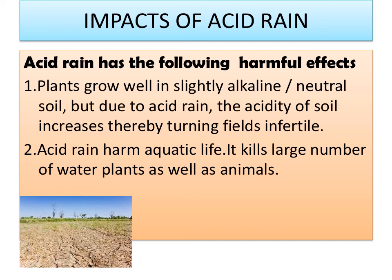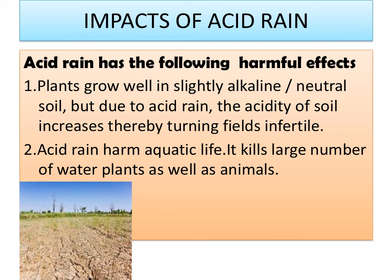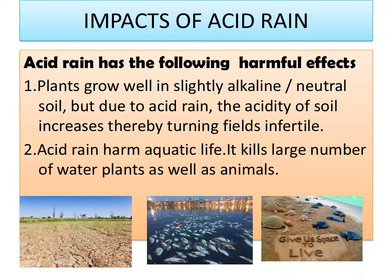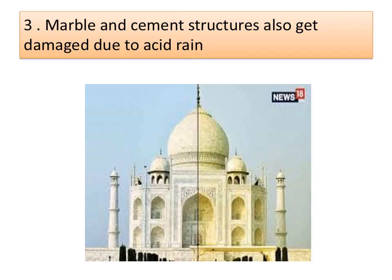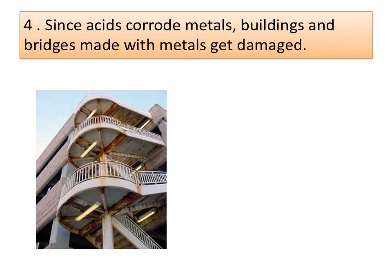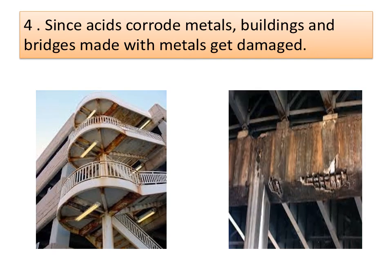Impacts of acid rain: plants grow well in slightly alkaline or neutral soil, but due to acid rain the acidity of the soil increases, turning fields infertile. Acid rain harms aquatic life, killing large numbers of water plants as well as animals. Marble and cement structures also get damaged due to acid rain — a very good example is our Taj Mahal. Since acid corrodes metals, buildings and bridges made with metals also get damaged.